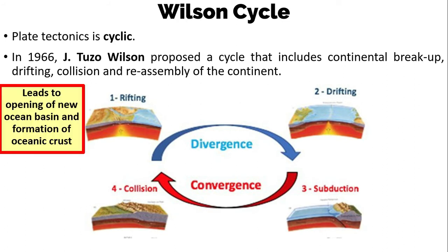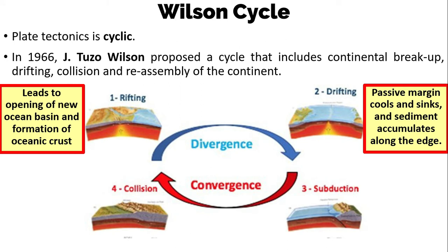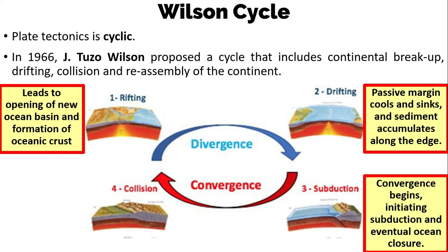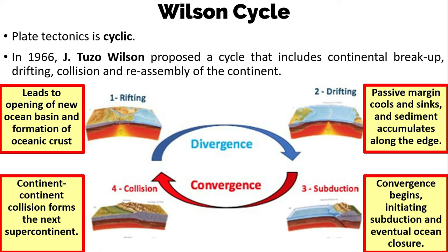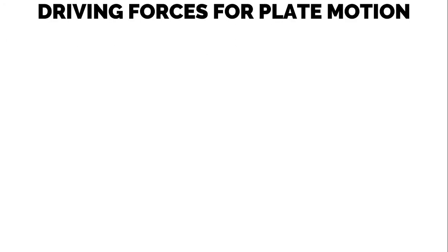The Wilson Cycle has four stages. First, rifting leads to opening of a new ocean basin and formation of oceanic crust. Second, drifting — the passive margin cools and sinks, and sediment accumulates along the edge. Third, subduction — convergence begins, initiating subduction and eventual ocean closure. Lastly, collision — continent-continent collision occurs, forming the next supercontinent, and then the cycle continues.